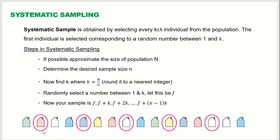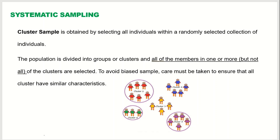Between 1 and k, using random sampling we select one number — suppose we get the first selection at the second position. If k is 3, then every third individual is selected: one, two, three — this one is selected; then one, two, three — this one; and so on. If only two remain at the end, we do not select from them. This process of selecting the first individual randomly and then every kth individual after that is called systematic sampling.